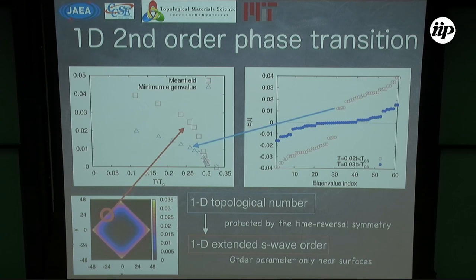In the high temperature region there is a one-dimensional topological number protected by time reversal symmetry. In the low temperature region there is no time reversal symmetry, so there is no one-dimensional topological number — we cannot define the winding number. But in the low temperature region there is a one-dimensional extended s-wave order induced only along the surface, because the winding number is available only along the surface.